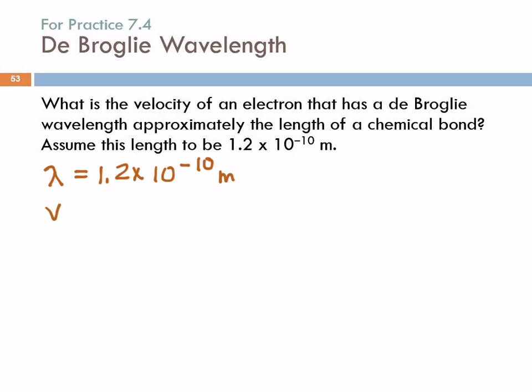Velocity is what we're looking for. The de Broglie relation says that the wavelength is equal to Planck's constant divided by the mass times the velocity: λ = h / (mv). We have not been given the mass — but we could look up the mass of an electron.